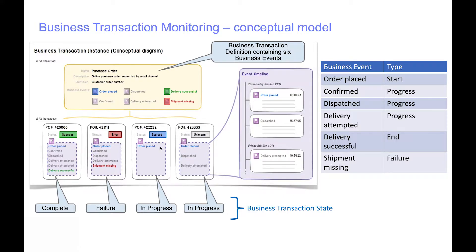An instance of a business transaction is recorded and each instance can be in a different state: in progress, complete, failed, or inconsistent. An instance of a business transaction is an individual customer order. Here we can see there are four transactions. The first transaction has completed successfully — it is in the complete state.